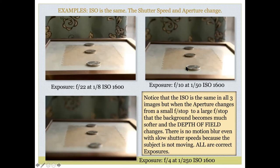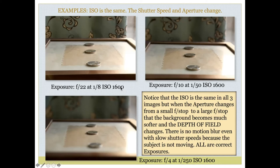This proves that you have to change at least one other thing when creating equivalent exposures. Let's say in the same lighting situation you took a picture of your cat and then a plant in the same light. Your first exposure was f/22 at 1/8s at ISO 1600. As long as your lighting stays consistent, you can alter the f-stop, shutter speed, or ISO to change how your picture looks.